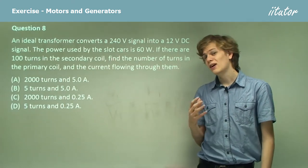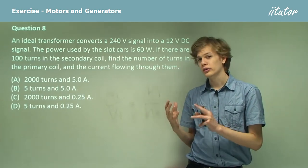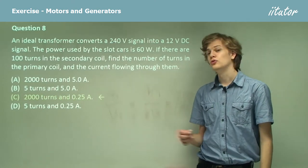So the primary coil is high voltage, so it has lots of turns and low current. Our answer then is going to be 2000 turns and 0.25 amps.